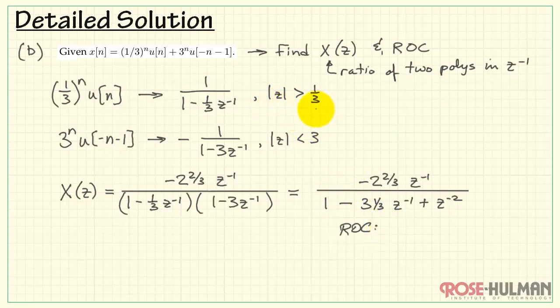The region of convergence will be the intersection of these two statements. We need the absolute value of z to be greater than one-third and less than three. That's the results for part b.